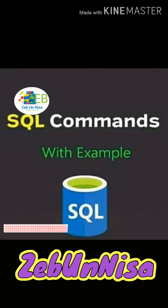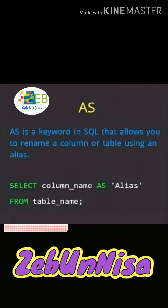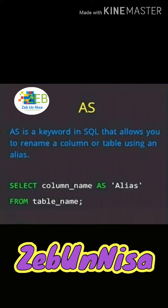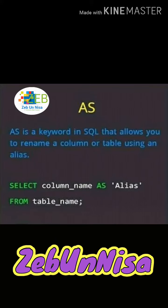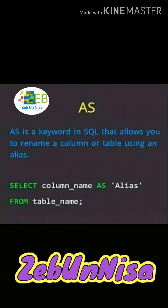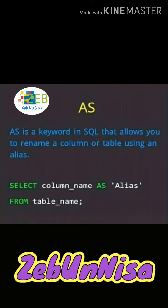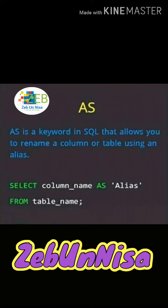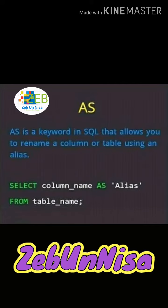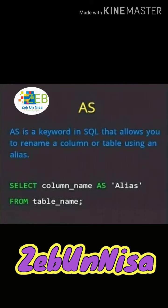SQL commands with example: AS is a keyword in SQL that allows you to rename a column or table using an alias. The syntax is: SELECT column_name AS alias_name FROM table_name; — that completes the AS command.